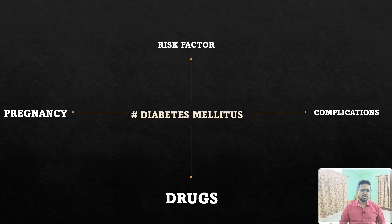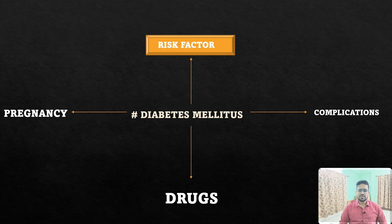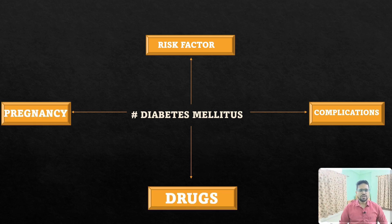Diabetes mellitus is the most important topic overall — it came up under drugs as oral and injectable hypoglycemic agents, and under pregnancy as gestational diabetes mellitus. The key subtopics to read are: risk factors, complications including microvascular and macrovascular complications and skin complications, drugs, and management. These are among the five most important topics that will definitely come this year.